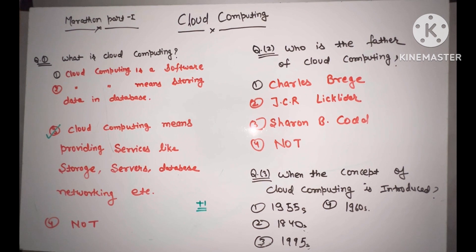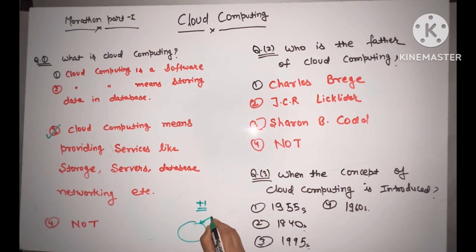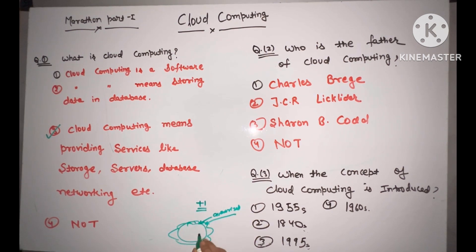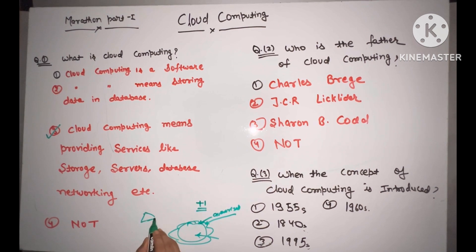Cloud computing is a concept where data is stored in the cloud, and you can use services like networking, servers, and databases. Authorized users can access this data from anywhere. For example, you use Google Drive — you put things in the cloud, and only you can access it unless you give authority to others.